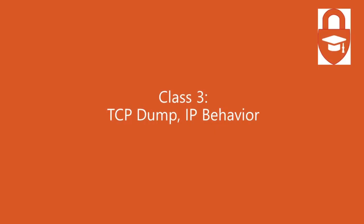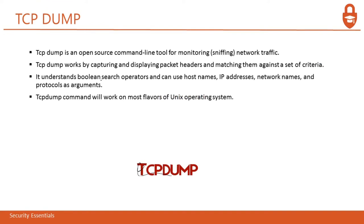In Class 3, we want to discuss TCP dump and IP behavior. TCP dump is an open source command line tool for monitoring and sniffing network traffic, used in Linux or Unix OS. TCP dump works by capturing and displaying packet headers and matching them against a set of criteria. It understands Boolean search operators and can use host names, IP addresses, network names, and protocols as arguments. Basically, the whole network traffic will be captured by TCP dump on Unix or Linux.